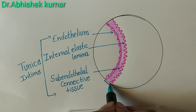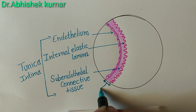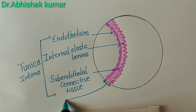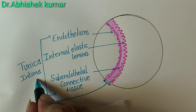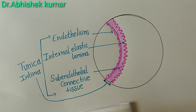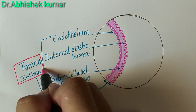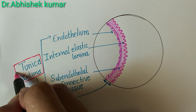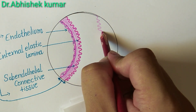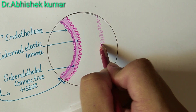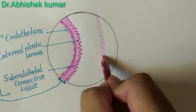The tunica intima layer — this much part is called tunica intima layer. The first layer of medium-size artery, tunica intima, is completed. So now we are going to make the second layer.